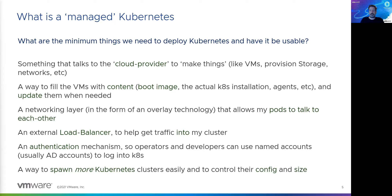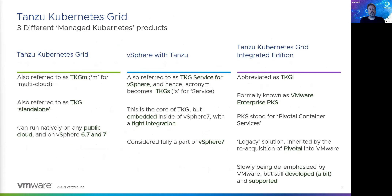VMware has three different managed Kubernetes solutions. The core technology — the most modern two of these three — is called Tanzu Kubernetes Grid, the standalone product on the left. VMware positions it as compatible with any cloud, which is more or less the case. We'll refer to this version as TKGM — M stands for multi-cloud. This is the informal name that VMware also uses internally.